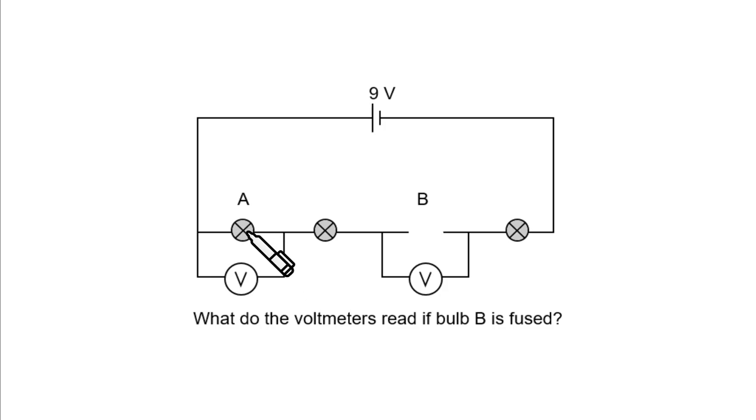So the voltmeter connected across bulb A is going to read zero volt. Because if you think of V equals IR, there is no current flowing through this R and therefore the voltage across this R is zero. So this one is pretty obvious.